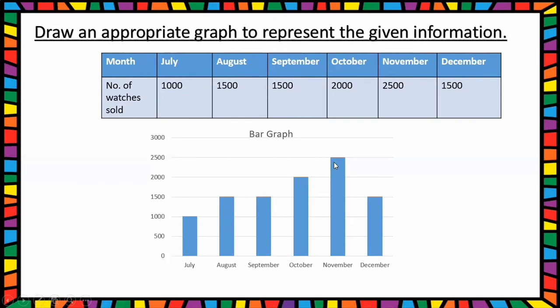November 2500 watches sold, December 1500 watches sold. So November only, more watches were sold, and July only, less watches were sold. So this is the best way to represent data using bar graph.